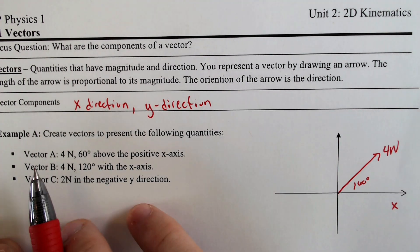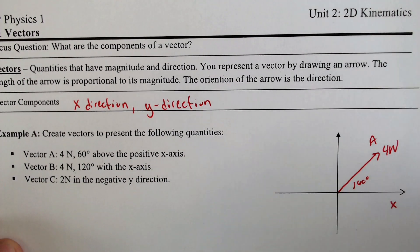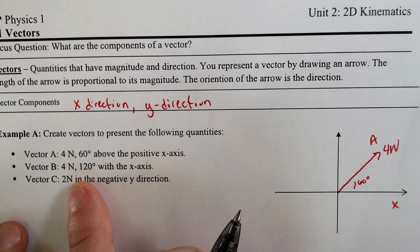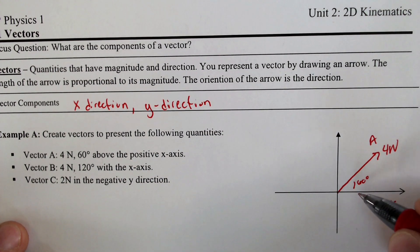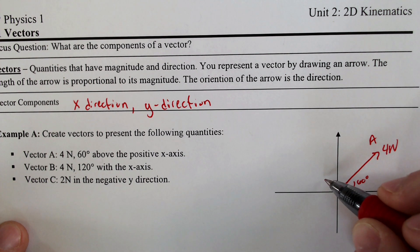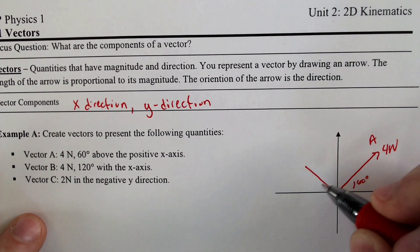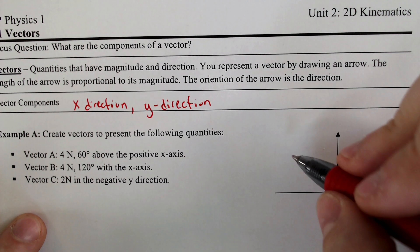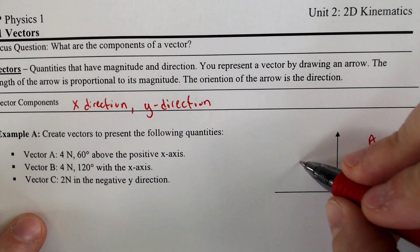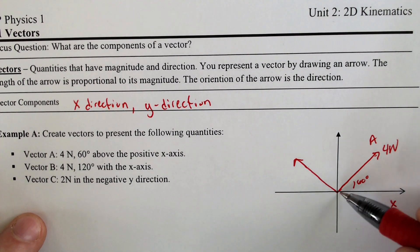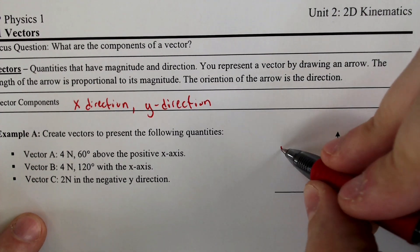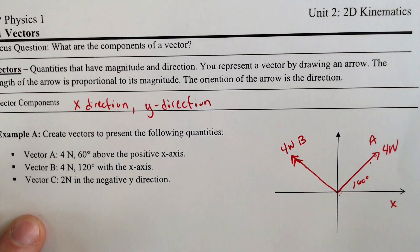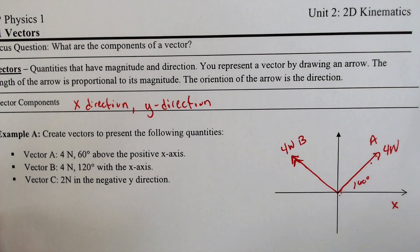And then for vector B, oh, we need to label it vector A. Vector B is 4 newtons, but it's 120 degrees with the x-axis, so we need to go 90 and then an additional 30 to get about 120 here. And it needs to be the same length that we drew for this one because this length was 4 newtons.